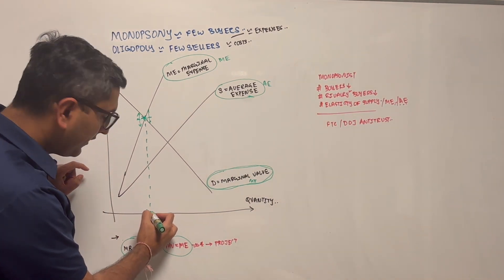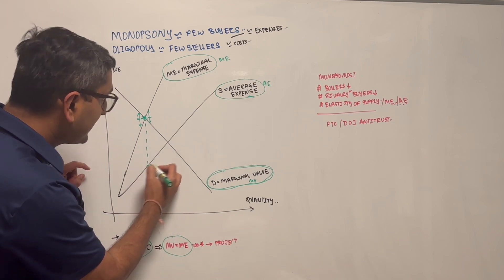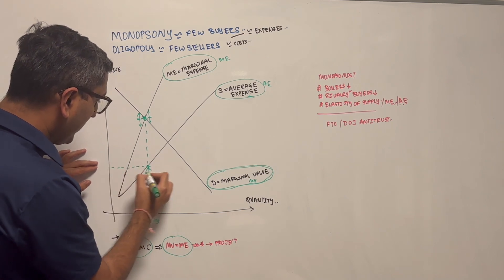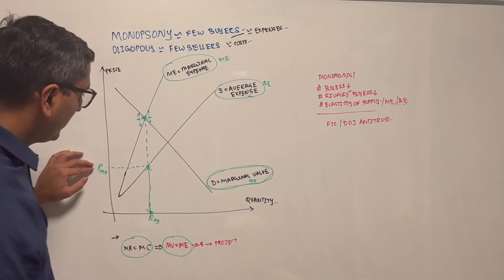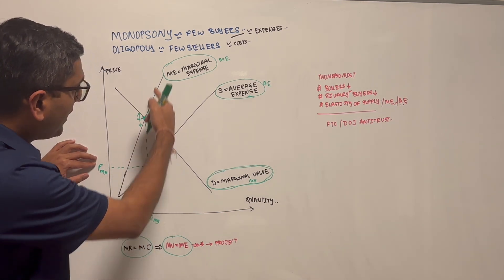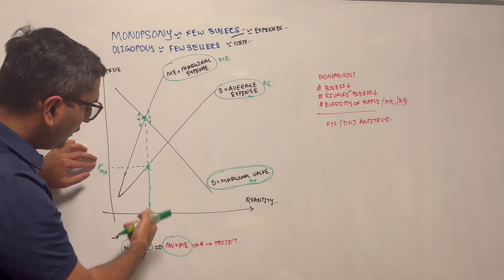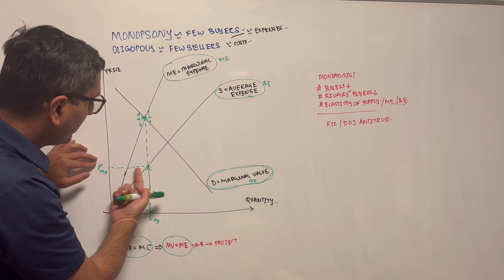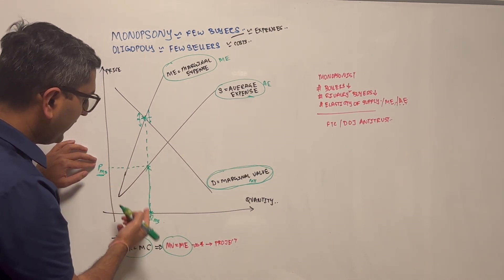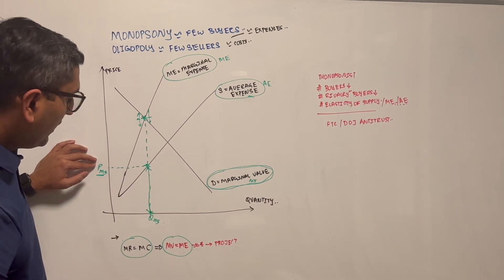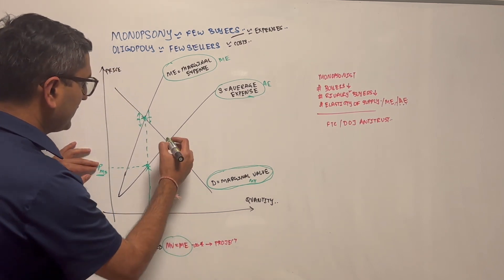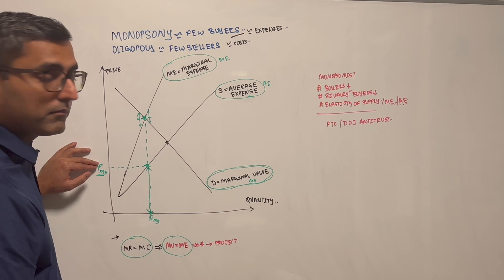At this quality, what's the price then? You look at where does it intersect the expense, the supply curve. That's where you get the price. You go here, you get price of a monopsonist. Look at that - you got the quantity where marginal value equals marginal expense, you got the quantity, you go up, hit the supply curve or the average expense curve. You get for this quantity, this is the price you will pay. Look at that - so now you are paying much lower price than what you would have paid if it was like a perfect competition.